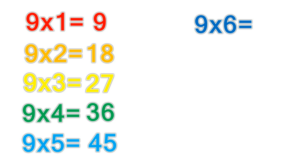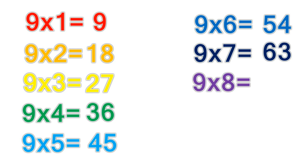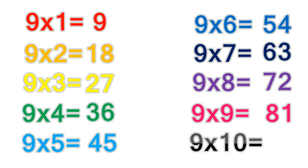9 times 6 equals 54. 9 times 7 equals 63. 9 times 8 equals 72. 9 times 9 equals 81. 9 times 10 equals 90.